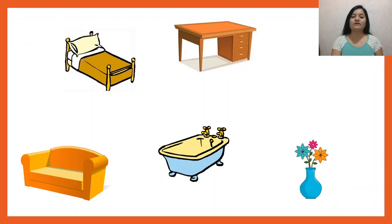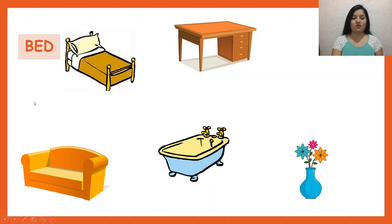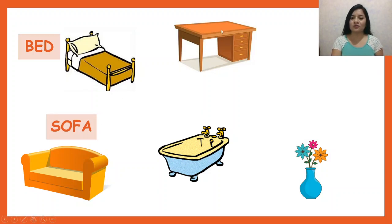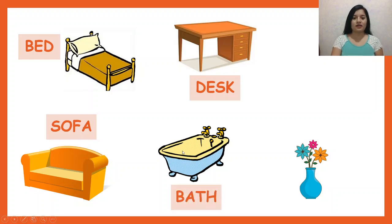Here we have five objects. What is this? Bed. What about this? A sofa. Now let's go to this object. Desk. This one. Bath. And this — base.